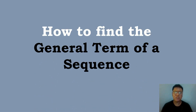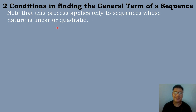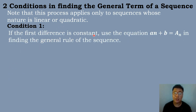In today's lesson, we will be discussing how to find the general term of a sequence. We have two conditions in finding the general term of a sequence. Note that this process applies only to sequences whose nature is linear or quadratic. Condition number one: if the first difference is constant, use the linear equation a times n plus b is equal to a sub n in finding the general rule of the sequence.